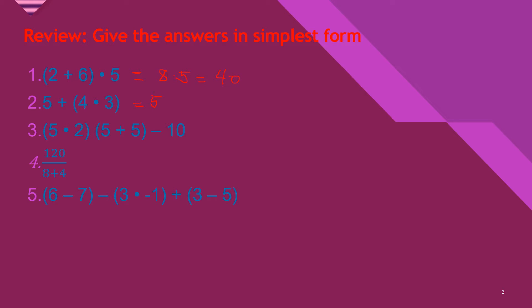So 5 + (4 × 3) equals 12, 12 + 5 equals 17.